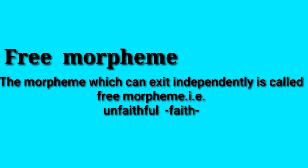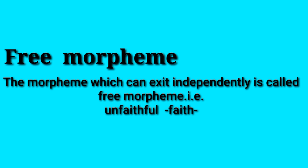Now its types: the first one is free morpheme. What is free morpheme? The morpheme which can exist independently is called free morpheme — a morpheme that can independently exist, stand alone, and be meaningful. For example, in the word 'unfaithful,' the word 'faith' is a free morpheme.